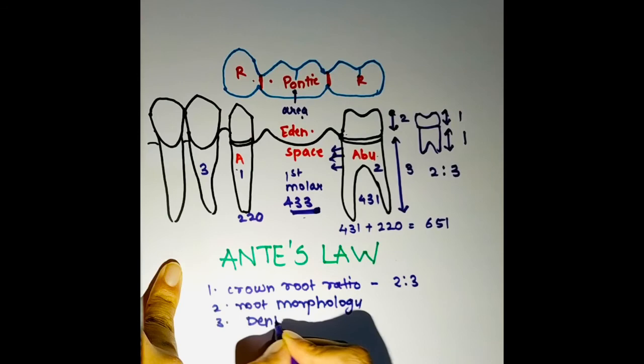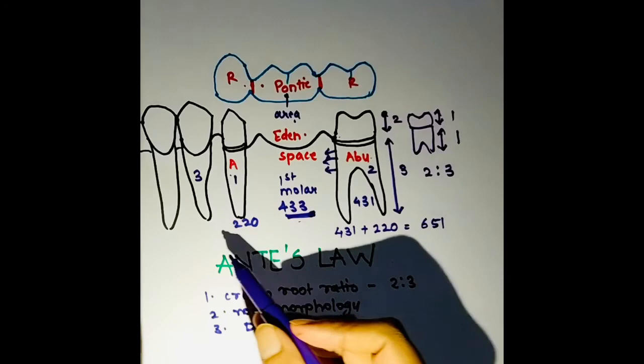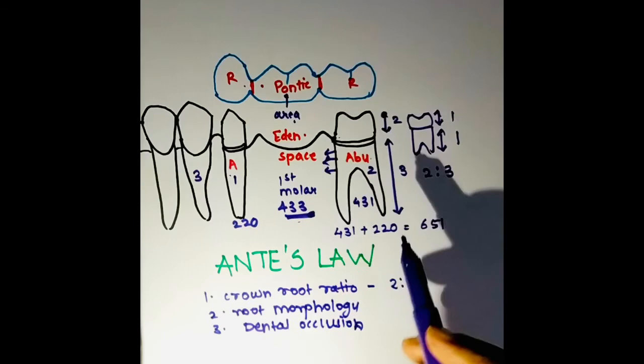So these are the three main factors to be considered when making fixed partial dentures along with Ante's Law. This law was given by Irvin Ante in 1926 and states that the periodontal area of the abutment teeth should be equal to or greater than the periodontal area of the tooth being replaced. I hope you found this video helpful. Thank you so much.